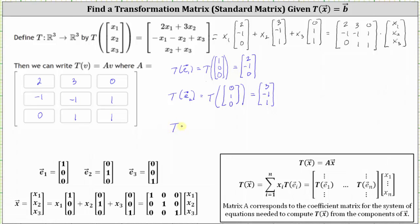Finally, we also have to find the transformation of vector e sub three, which is the transformation of the vector (0, 0, 1). So x sub one and x sub two are both zero, and x sub three is equal to one. The first component of the image is two times zero plus three times zero, or zero. The second component is negative zero minus zero plus one, or one. And the third component is zero plus one, or one.